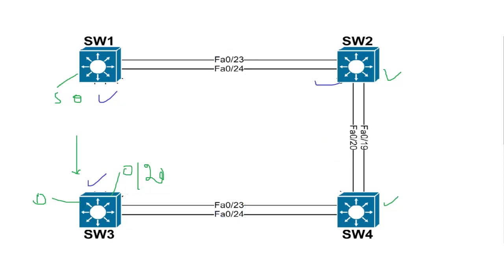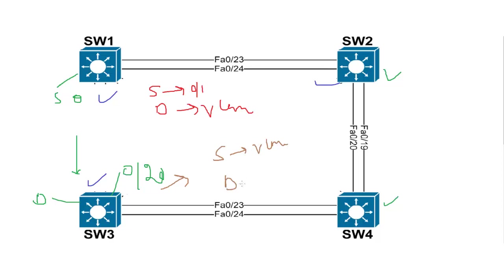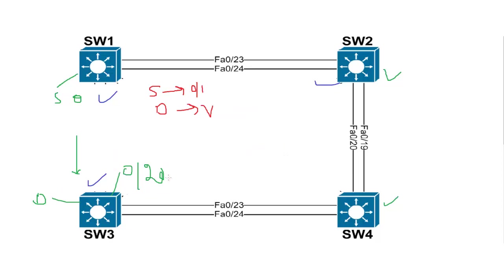On Switch 1, I'll create a monitor session where the source will be the source port zero slash one and the destination will be the remote SPAN VLAN. On Switch 3, the source will be the remote SPAN VLAN and the destination will be my actual destination port zero slash twenty.